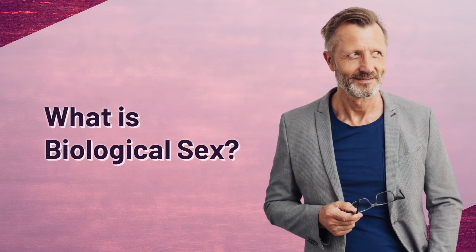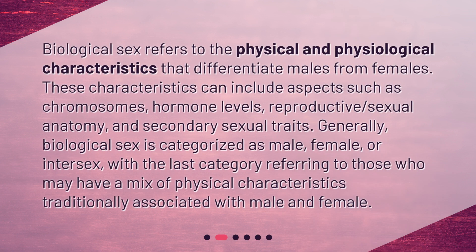What is biological sex? Biological sex refers to the physical and physiological characteristics that differentiate males from females. These characteristics can include aspects such as chromosomes, hormone levels, reproductive and sexual anatomy, and secondary sexual traits. Generally, biological sex is categorized as male, female, or intersex, with the last category referring to those who may have a mix of physical characteristics traditionally associated with male and female.